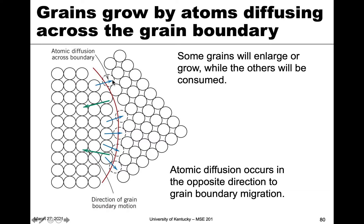All the atoms are transferred to the right grain. You can see the one here, which is attached to the left grain, is jumping over the boundary and connecting or attaching to a site on the surface of that grain — going into the proper position. Anywhere that jump happens, you're basically making this grain larger and making this grain smaller. When we have grain growth, some grains will enlarge or grow, and others will basically be consumed. It relies on atomic diffusion in the opposite direction of the grain boundary migrating — the grain boundary is moving over here.